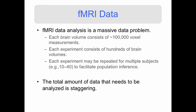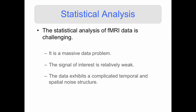In addition, each experiment may be repeated for multiple subjects so that we can perform population inference. In sum, the total amount of data that needs to be analyzed is staggering, making the problem very challenging from a statistical point of view — but it also makes it pretty fun. Other things that make the statistical analysis challenging is the fact that the signal of interest is relatively weak, and the data exhibits a complicated temporal and spatial noise structure.